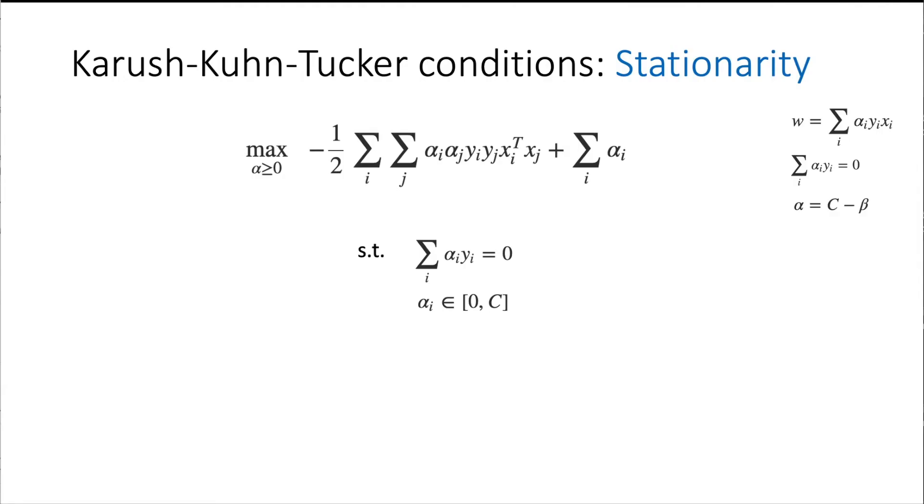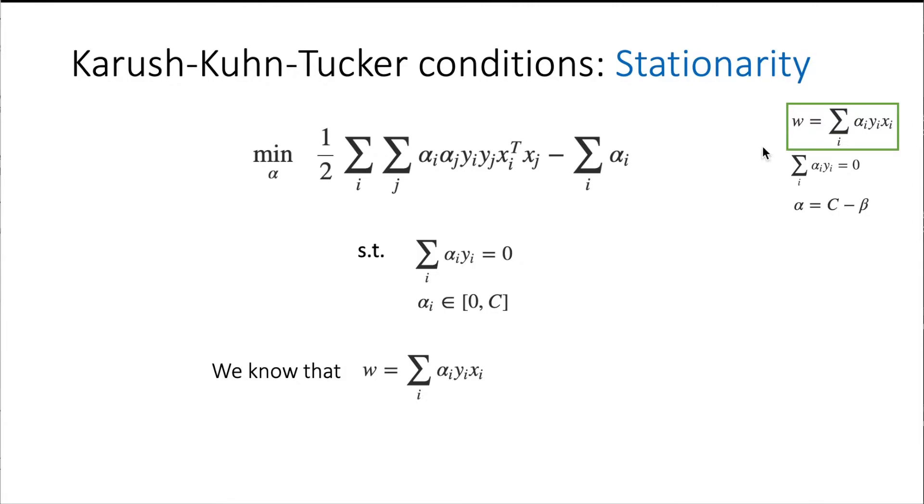Okay, now we have this objective function subject to these two restrictions here, and we can actually change the maximum to a minimum just by changing the sign of this objective here. Also recall that we know that w is exactly this sum here.